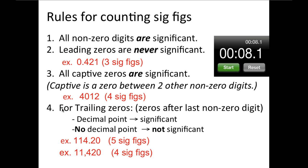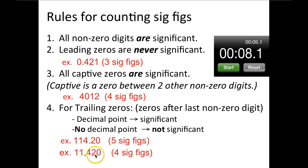For trailing zeros — that's zeros after a non-zero digit — it could go either way. If you have a decimal point, the entire number including zeros at the end is significant. For example, we have a decimal point here, so we have 1, 2, 3, 4, 5 significant digits. In this next example, we do not have a decimal, and if there's no decimal, the trailing zeros at the end of your number are not significant. So we only have 1, 2, 3, 4 significant digits.